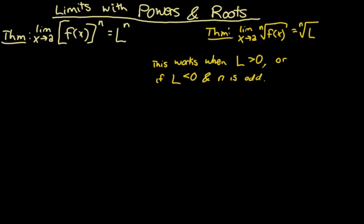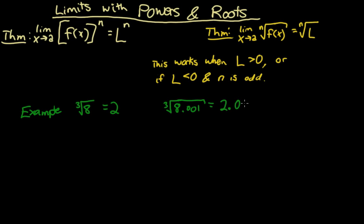Limits with powers and roots work the same way they do with everything else. For a quick example: the cubed root of 8 equals 2, but the cubed root of 8.001 is equal to 2.0000083. It makes sense that because these values are close to the same number, so are the answers. The bigger we make the input, the bigger the answer would be; the smaller we make it, the smaller our answer would be, and we can get as big or small as we want on either one.